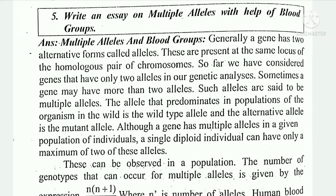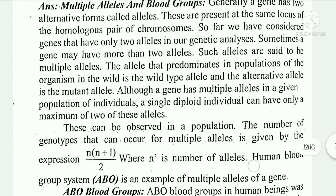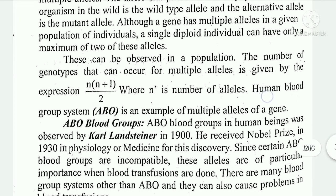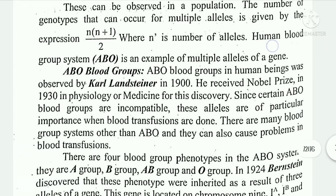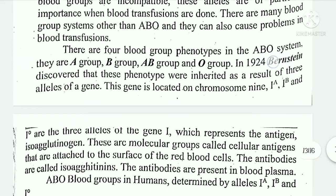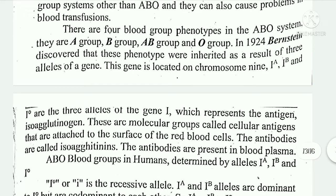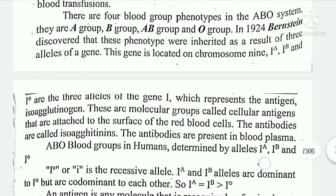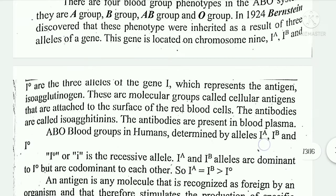Fifth important question: write an essay on multiple alleles with the help of blood groups. This is a very interesting question. Blood groups explain how parents with certain groups can have children with different groups. There are four types of blood groups: A, B, AB, and O.